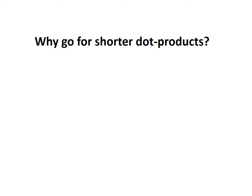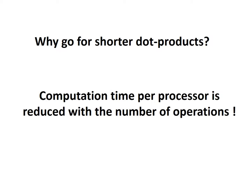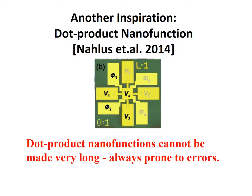Why go for shorter dot products? This is because the computation time is reduced with the number of operations — that is, the length of the dot products. Another interesting inspiration comes from recent work on analog dot product nano functions that are prone to errors and delays in convergence when designed for larger dot products.